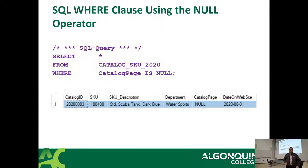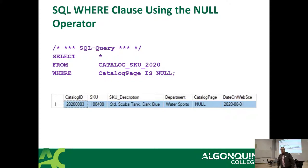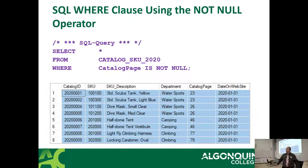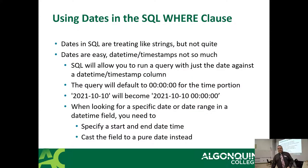For NULL values, you can check with IS NULL or IS NOT NULL. IS NULL finds things where there's a null value in a column, and IS NOT NULL gives everything that has a value.